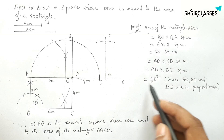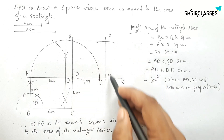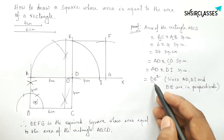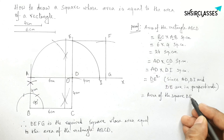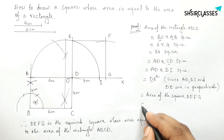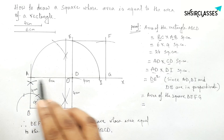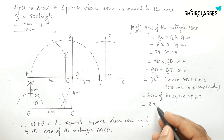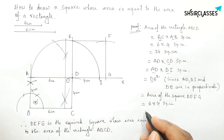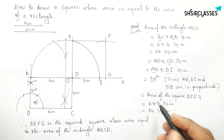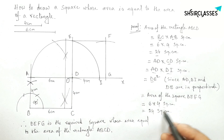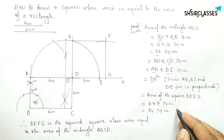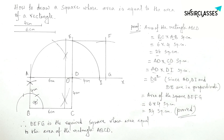DE is a side of square DEFG, and DE squared means the area of square DEFG. Putting the values of AD and DI: 6 times 4 equals 24 square centimeters. So the area of the rectangle and the area of square DEFG are both equal — that's the proof. If you want the construction steps, please comment below.